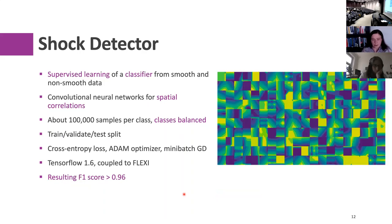The problem is we need to detect where the shocks are at the sub-element level, but all available methods required retuning the parameters of these indicators for every grid and every case. Our idea was to offload this to machine learning and supervised learning. We generate artificial training data: smooth and non-smooth functions. We write them down in 2D, sample them, and create a database — labeling smooth functions as non-shocks and non-smooth functions as shocks.